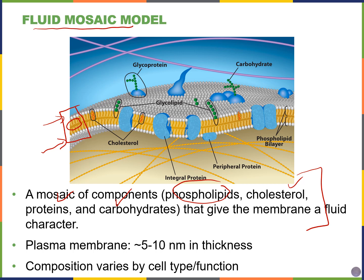The cell membrane is considered fluid because these components are not stuck in place — there is some lateral movement left and right for all of these molecules. The structure of the cell membrane and that phospholipid bilayer was really discovered around the 1950s when transmission electron microscopy became more popular and prevalent. This allowed researchers to see that the cell membrane was actually made of a bilayer of phospholipids rather than a single layer that they originally thought it was composed of.